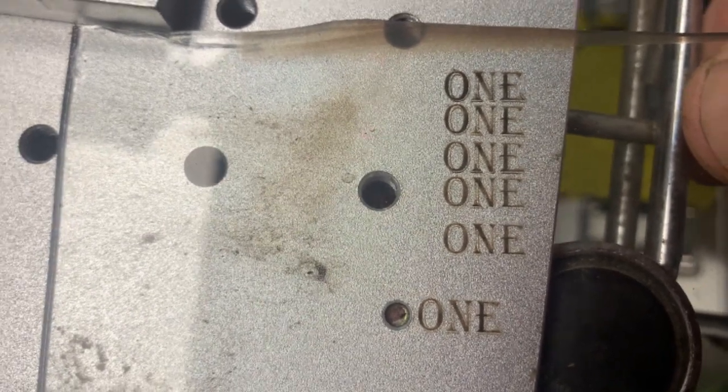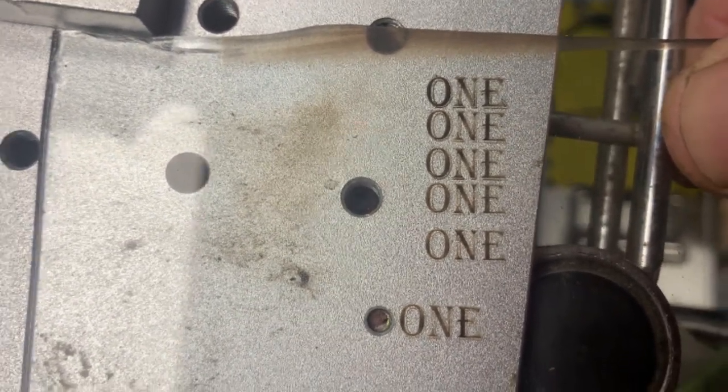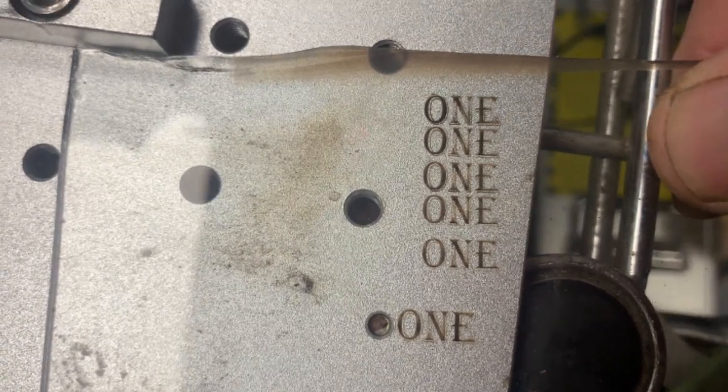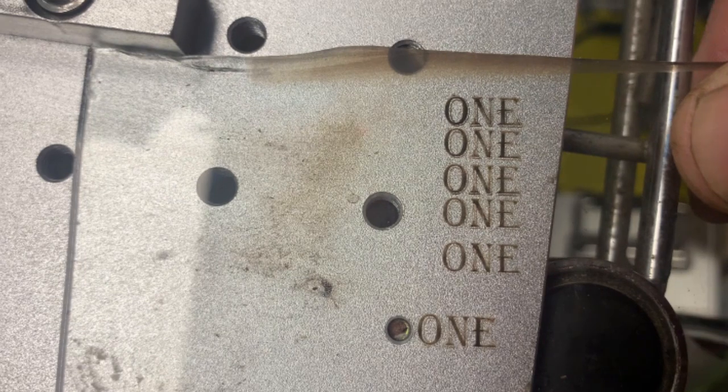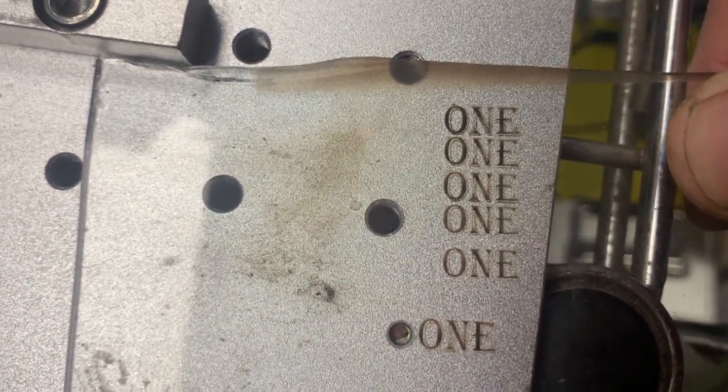Well, I reckon that means you can use the same piece of stainless over and over. You can play with the hatching, play with the power and speed settings to improve it, but I reckon that answers the question. You can use it over and over. That surprises me.